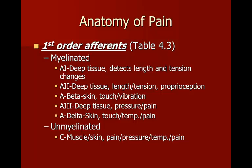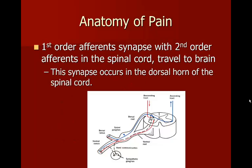Unmyelinated fibers are your C receptors, usually in the muscle and skin. They detect pain, pressure, and temperature. These are slow-transmitting and carry more dull, achy kinds of pain. First-order afferents synapse with second-order afferents in the spinal cord and then travel to the brain. The synapse occurs in the dorsal horn of the spinal cord — pain detected in your body travels down through the nerves into the spinal cord, into the dorsal horn, where it is transmitted and relayed up through the spine and eventually into your brain.